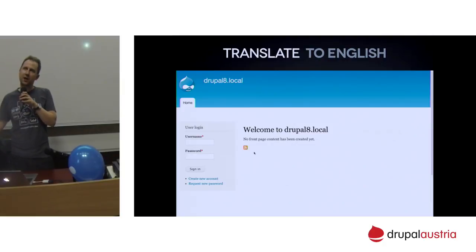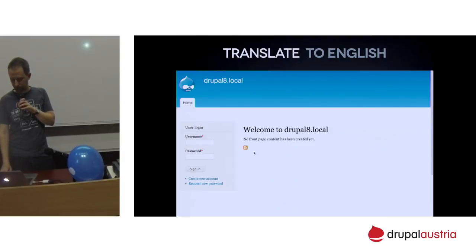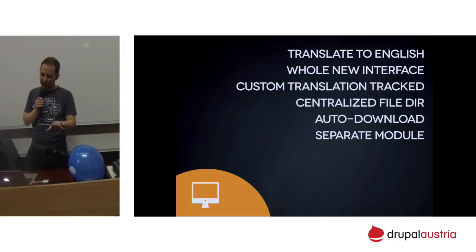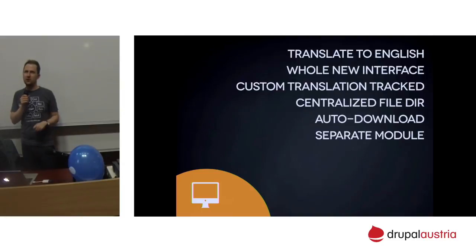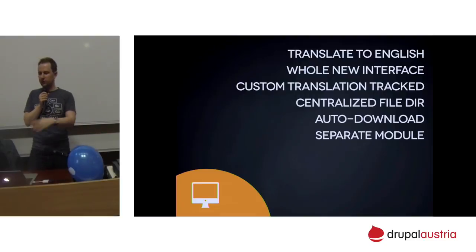The reason we don't have this enabled by default is performance — there's a lot of caching behind interface translation. It's always better if we don't even look up translations when we don't need to. So that's interface translation: you can translate to English, there's a new easier interface, you can translate inline, your custom translations are tracked so customizations aren't overwritten, downloads are automated and centralized for deployment, and it's a separate module — if you just want to track languages of PDF files, you don't need this module at all.